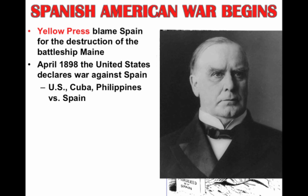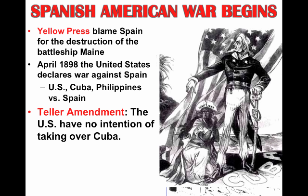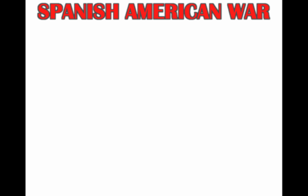The Spanish-American War was the U.S., Cuba, and the Philippines versus Spain. At the start of the war, Congress passes the Teller Amendment, where the U.S. basically declares to Cuba that we have no intention of taking over Cuba — they will control their own government and retain their sovereignty. We'll see how that plays out as the war ends.